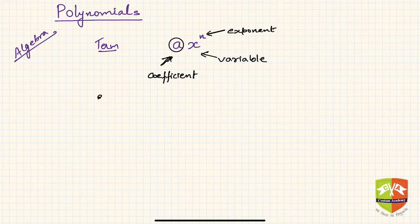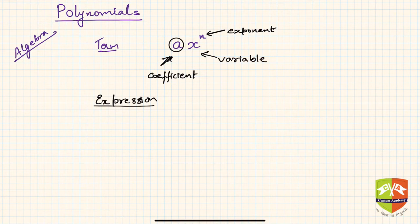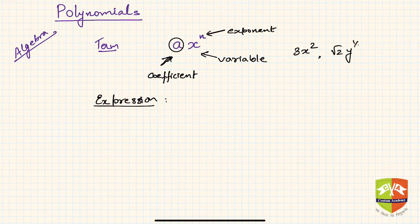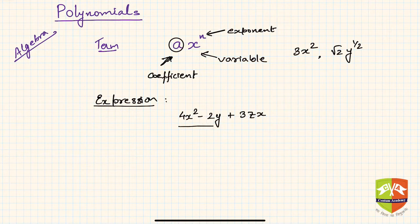Next in line is the definition of an expression. A combination of multiple terms separated by addition and subtraction operators is called an expression. For example, 3x² is a term, and √2·y to the power half is also a term. An expression would be a combination of these terms, such as 4x² − 2y + 3zx — this is an algebraic expression.